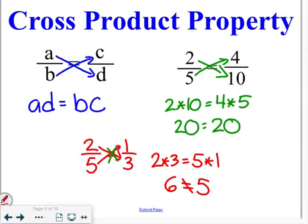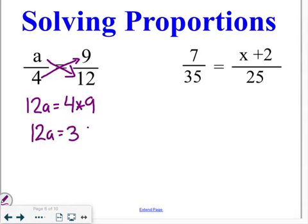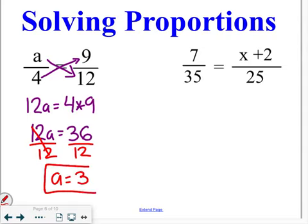So, this cross product property allows us to decide if ratios are equivalent, and it will also help us solve if there are variables involved in our proportions. For example, we have A over 4 is equal to 9 over 12. We're going to start by using the cross product. So, we get 12 times A, or 12A is equal to 4 times 9. That gives us 12A is equal to 36. Finishing to solve that equation, we divide both sides by 12, and end up with an answer of A is equal to 3.